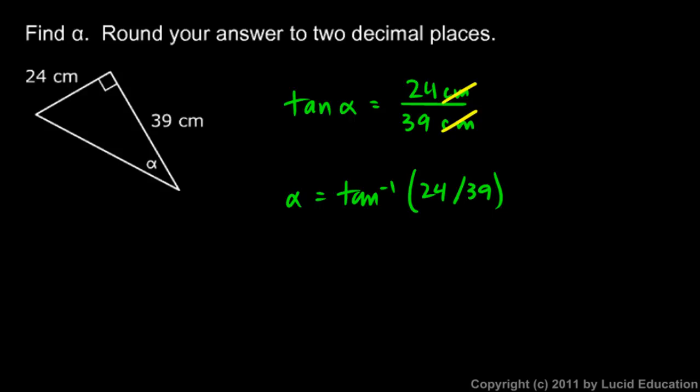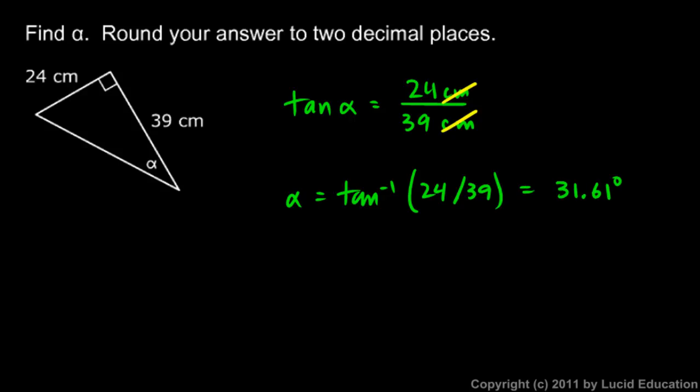Instead of computing it in advance, just put it directly into the calculator: alpha equals inverse tangent of 24 over 39, which comes out to 31.61 degrees to two decimal places.